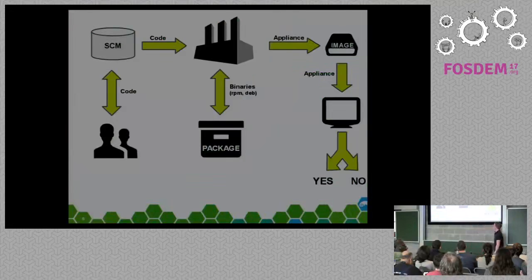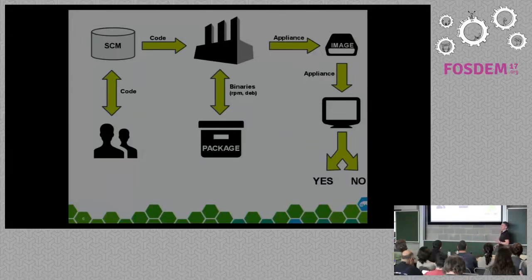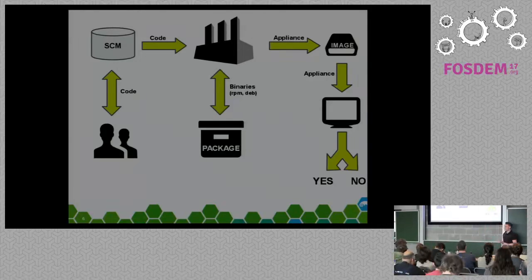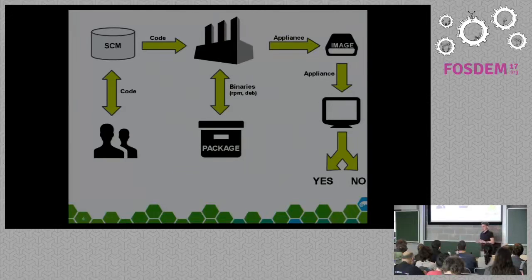This is basically the workflow I want to show you. In the right corner you see some of you coding and pushing your code constantly to the upstream repository — it could be GitHub or some other favorite source control management system. From the repository we want to get the code into the build service which automatically builds binaries for us — for instance RPM packages or Debian packages which you can install on your favorite distributions. The next step is to build all of these packages into a complete Linux image, for instance an ISO or a raw image. With my raw image, every time I build a new package and get a new distribution, I want to be able to see if this image still works.